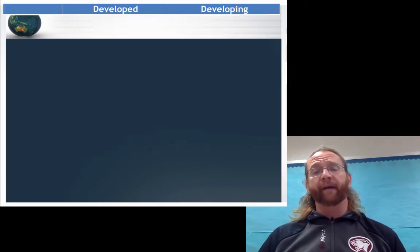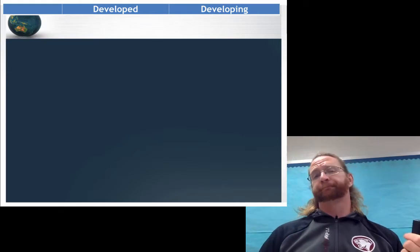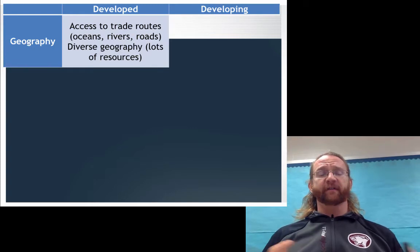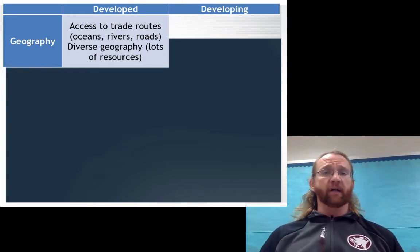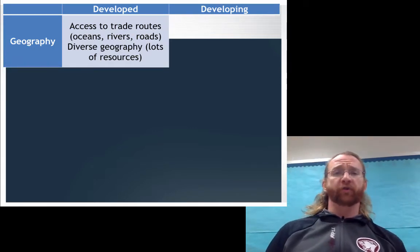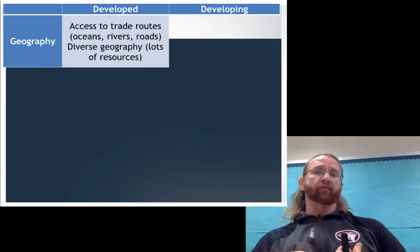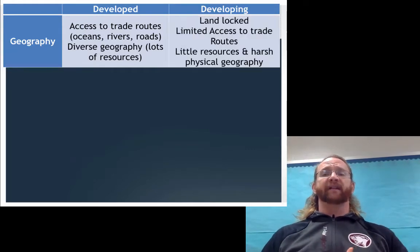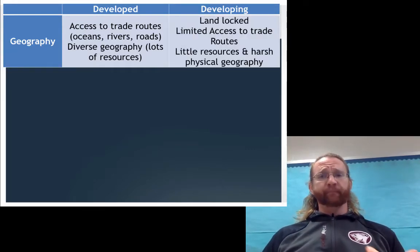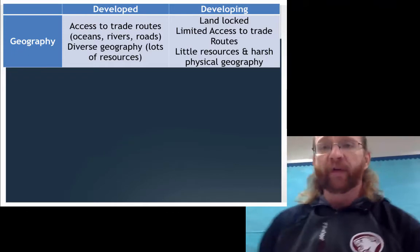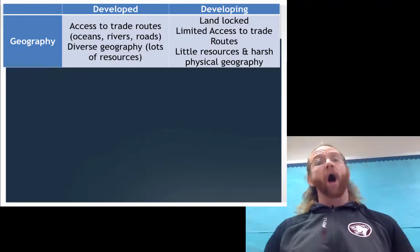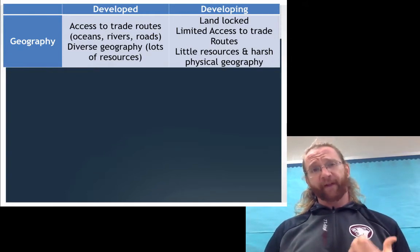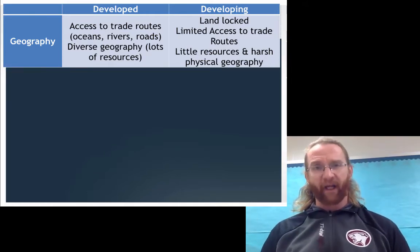Developed countries would have higher income; developing countries would have lower income. In terms of physical geography, developed countries have lots of access to trade routes — they're close to oceans and overland trade routes, and they have lots of diverse geography, which means lots of natural resources. Developing countries are very limited in access to trade routes. They are often landlocked, and their physical geography makes it very difficult for them to have a wide variety of natural resources.